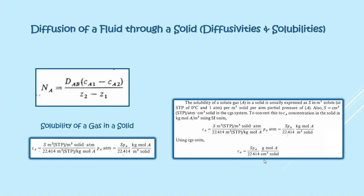If the final units to be produced are gram mole per cubic centimeter, then use 22,414 in the denominator instead. The flux formula remains the same, and the concentration or solubility formula is what you use to determine how soluble the gas is in your given solid.